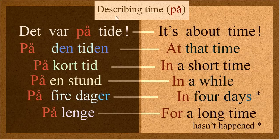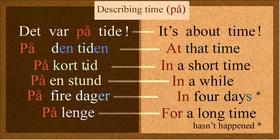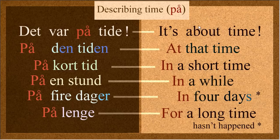When you're describing time, and remember these are just a few examples — det var på tide — that's an expression but it uses på. På den tiden — 'at that time' — is a definite form, very specific. På kort tid, på en stund, på fire dager, på lenge. På fire dager actually means something hasn't happened in four days. På lenge means it hasn't happened for a long time. The main point is you're using på in all these cases, and as time goes by it becomes more natural.